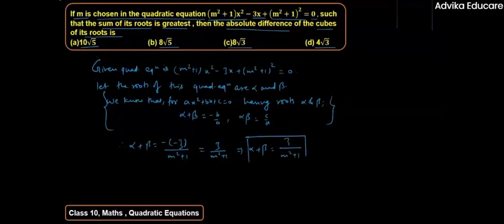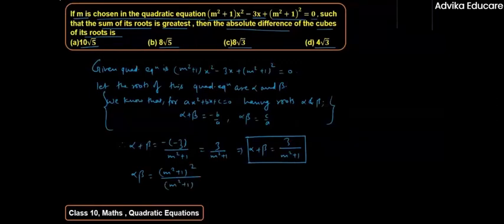Now we find alpha·beta. The formula is c/a. Here c = (m² + 1)² and a = (m² + 1), so one factor of (m² + 1) cancels out, giving alpha·beta = m² + 1.